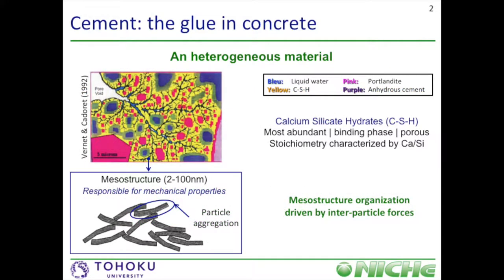This work is about cement, which is the glue in concrete materials. Cement is a heterogeneous material constituted of many phases. On the top left, we can see a cartoon of a cement paste after the setting. Each color on this cartoon corresponds to a given phase: blue is for liquid water, pink is for portlandite, purple is for high nitrous cement, and yellow is for calcium silicate hydrates, or CSH in the notation of the cement industry. As observed in the cartoon, CSH is the most abundant phase.